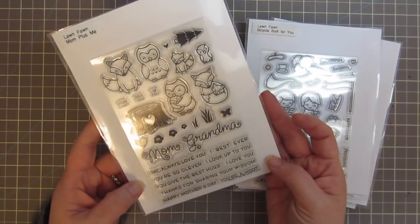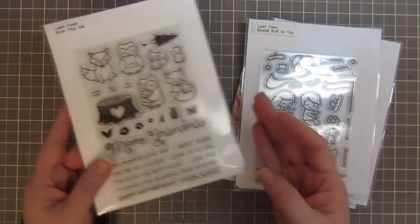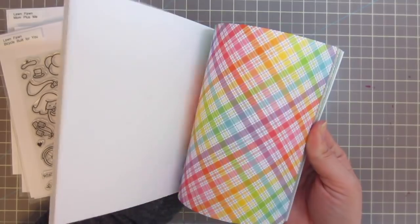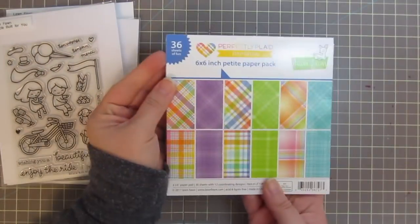I'll be using Meow You Doing, Bicycle Built For You, Mom Plus Me, and I'll also be using the Perfectly Plaid Rainbow 6x6 pad.